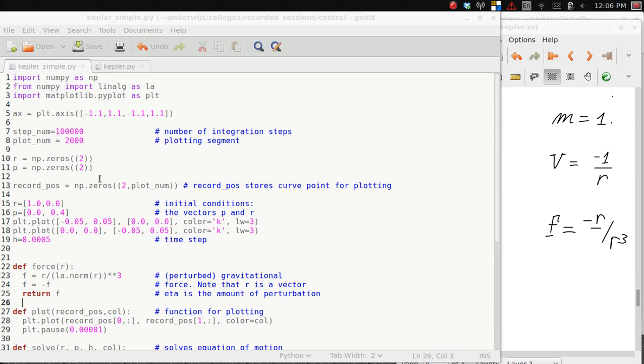The initial conditions are that the particle is released on the x-axis at 1, 0, and it leaves the x-axis with a velocity in the y-direction of 0.4. The solution proceeds by moving the particle step by step, and the time elapsing between two time steps is 0.0005.